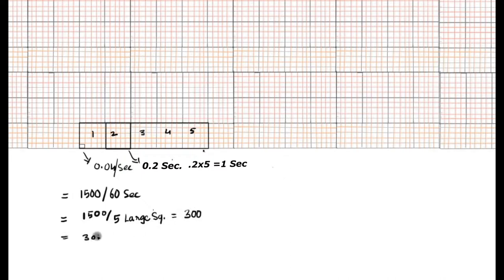So 300 per minute or 60 seconds. Alternatively, 30 upon 6, where 30 large squares are covered per 6 seconds.